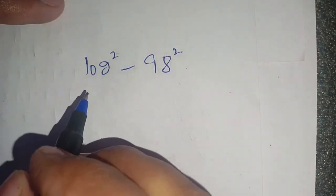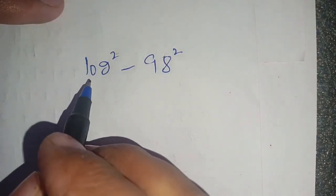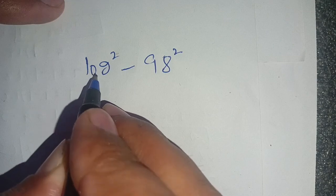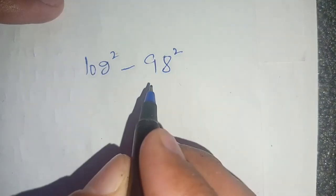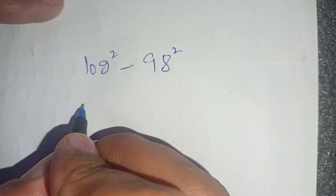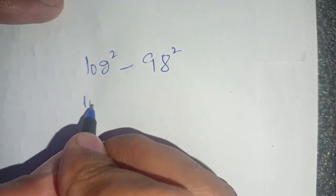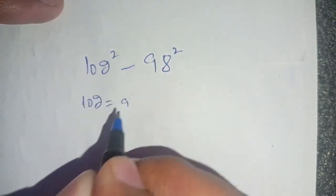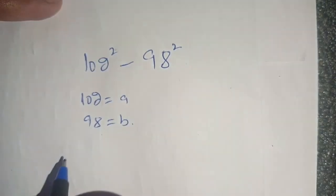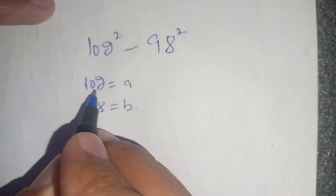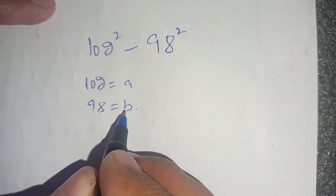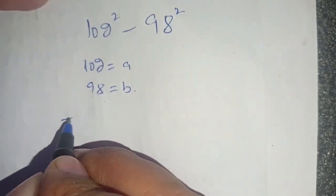Hello everyone. In today's video we are going to solve this difference of squares problem: 102 squared minus 98 squared. First of all, we consider 102 equal to a and 98 equal to b. In place of 102 we substitute a, and in place of 98 we substitute b.